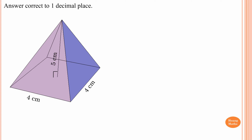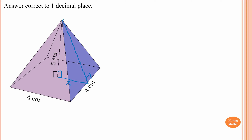For this pyramid, all four sides are the same because it is a square pyramid. Construct a right-angle triangle on one side. From here to here is four, so this must be half of four, which is two centimeters. Label this x. x² = 2² + 5² = 4 + 25 = 29, so x = √29. I'll leave in exact form first.